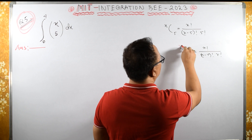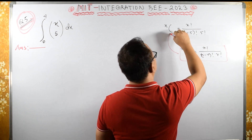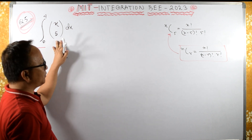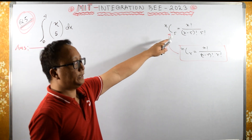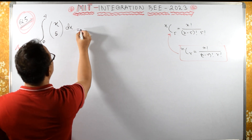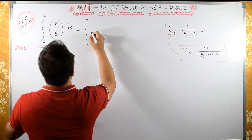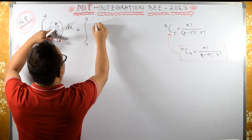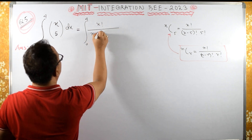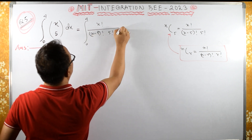From this formula we are getting this expression. So instead of X C φ, we can write the integral as the limit from 0 to 4 of X factorial upon (X minus φ) factorial times φ factorial, dx.